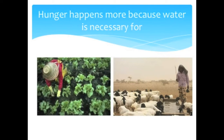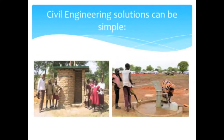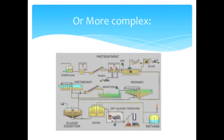Civil and environmental engineering solutions can be simple, like this ventilated improved pit latrine and this hand pump. Or they may be more complex, like the gravity flow systems most of us have, with flush toilets, sinks, and faucets throughout our homes and communities.